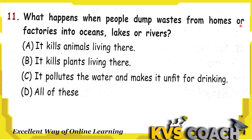Next question: what happens when people dump waste from homes or factories into oceans, lakes, or rivers? Option A, it kills animals living there — yes, when we dump waste into water, aquatic animals eat it and the water gets polluted, killing them. Option B, it kills plants living there — yes, plants also absorb the polluted water and die. Option C, it pollutes the water and makes it unfit for drinking — yes, we also drink water from these bodies. So all options are correct, and the right answer is option D, All of these.